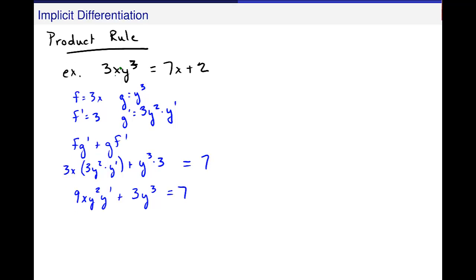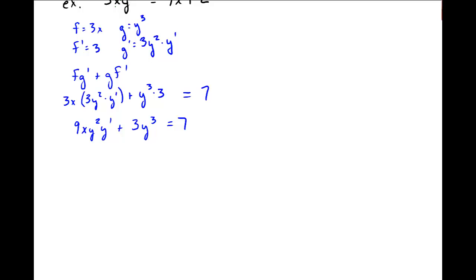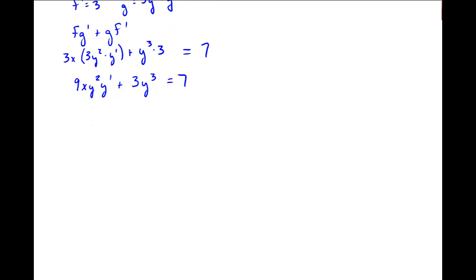And then I'm going to come down and go ahead and again I want to solve for y prime and get it by itself. So I move the 3y cubed over to the other side, 7 minus 3y cubed now on the right and divide now by this term 9xy squared to get y prime by itself.